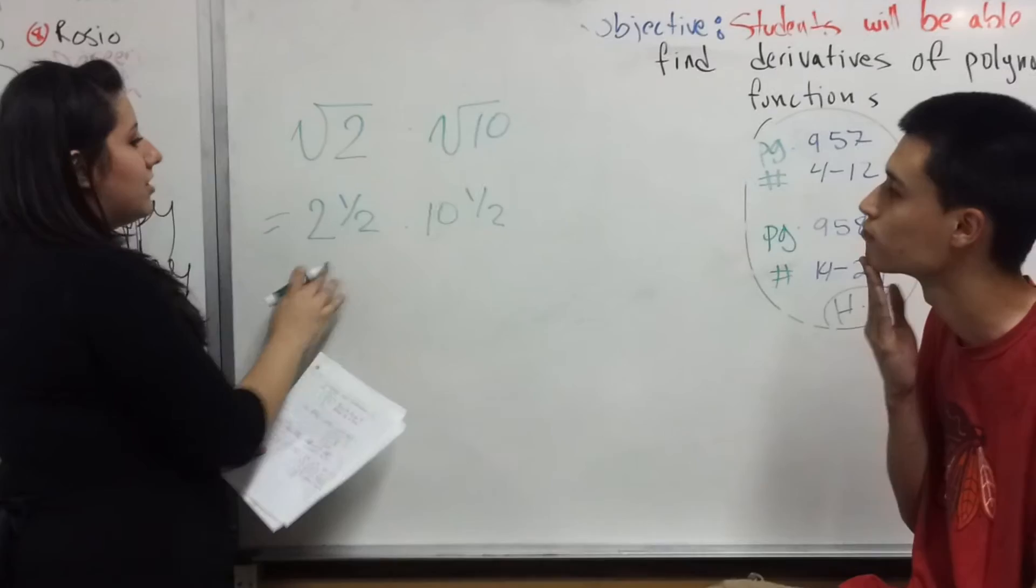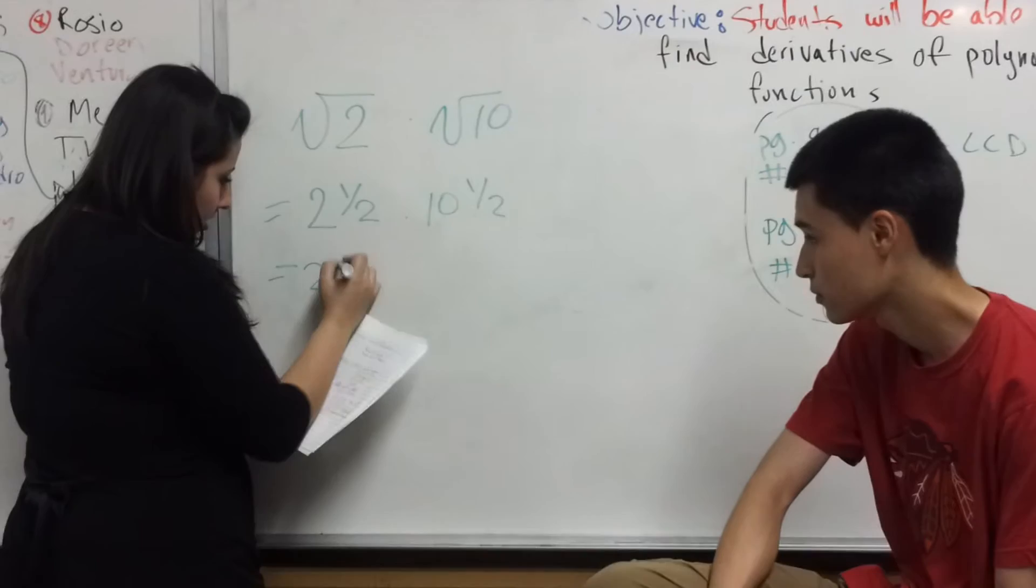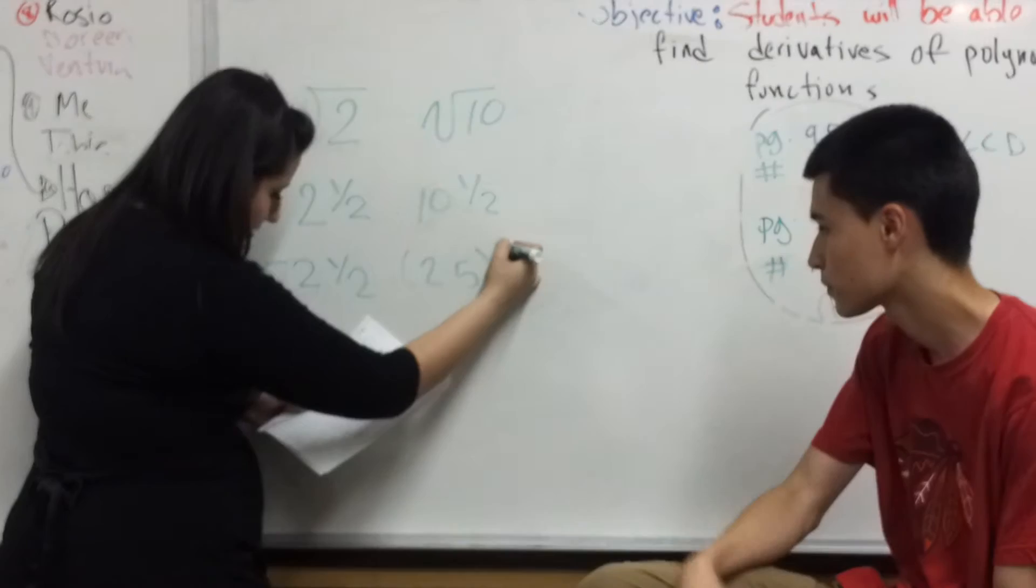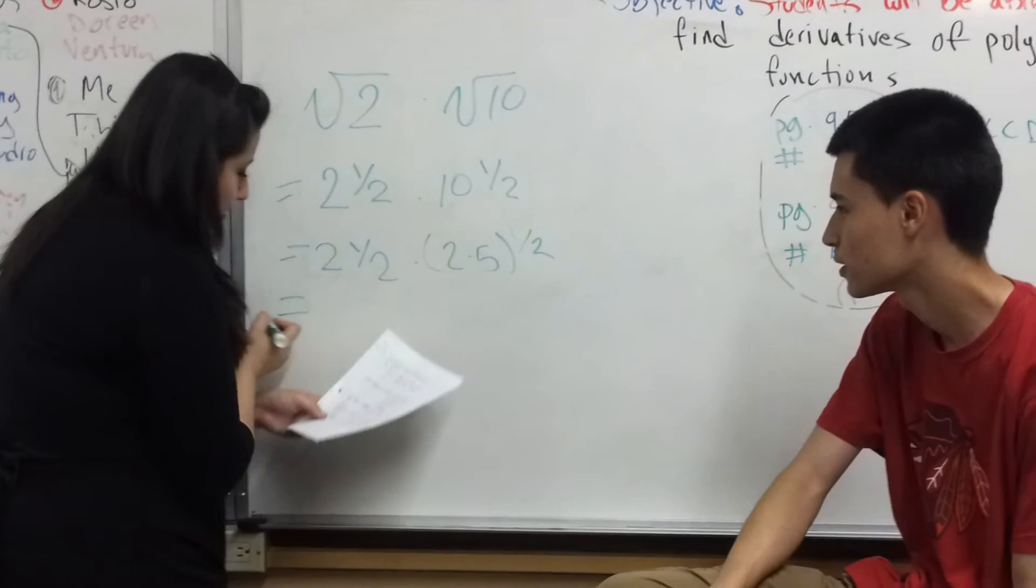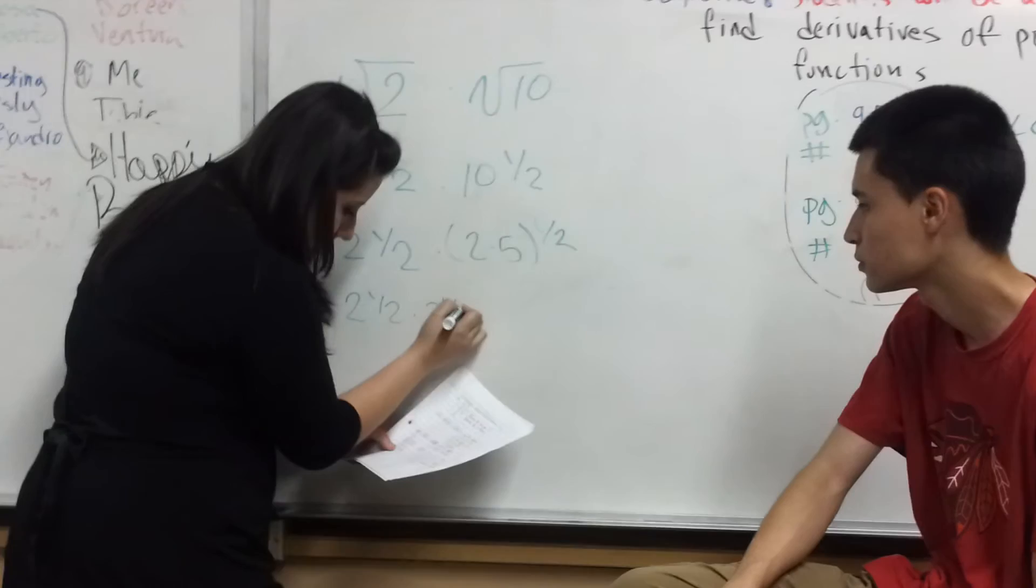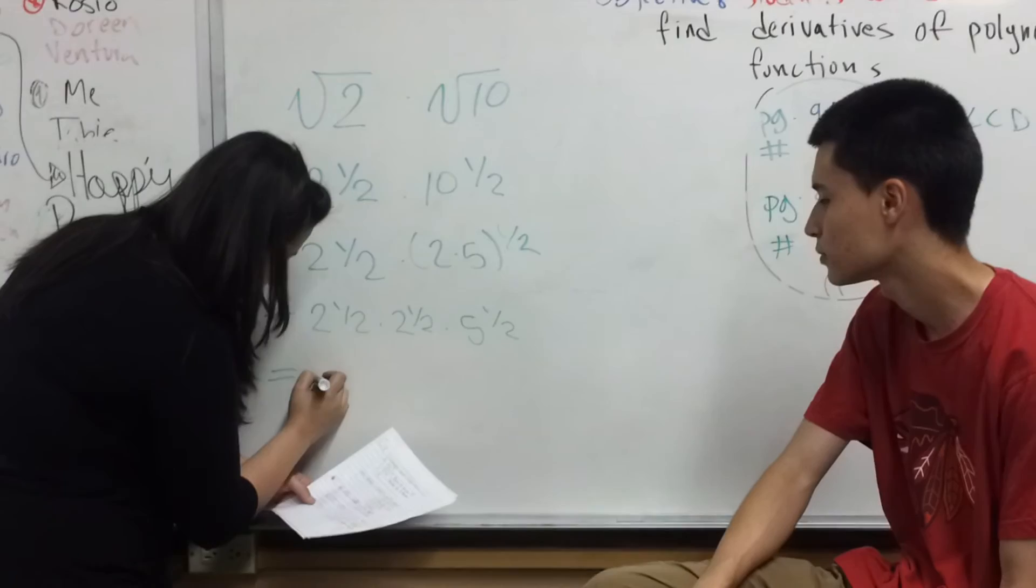So that equals to 2 times 5 equals to 10. And then that equals to 2 to the half times 2 to the half times 5. And the answer is 2.